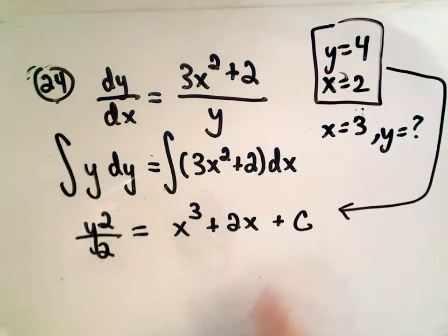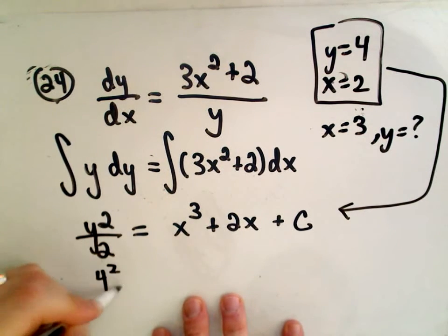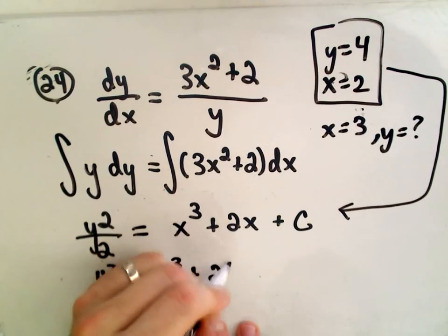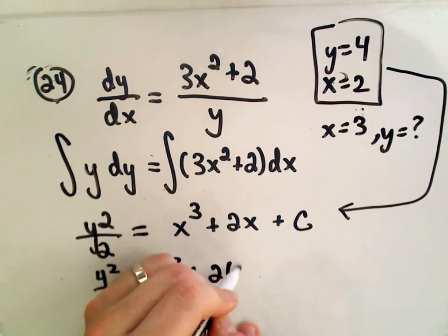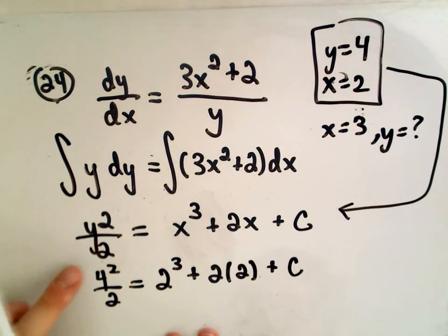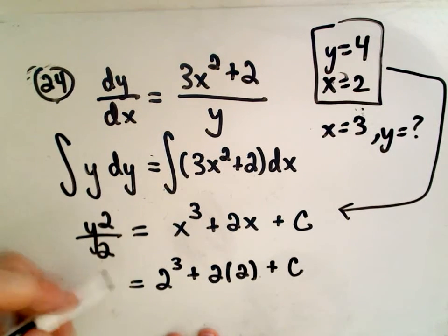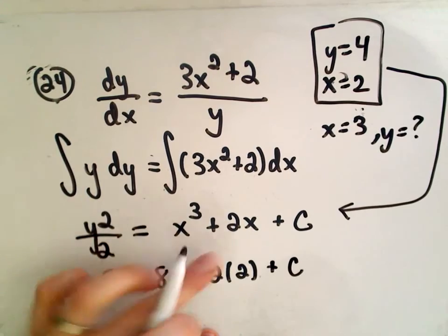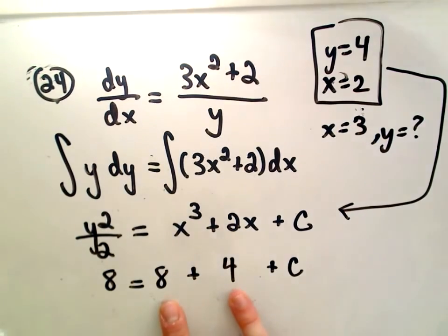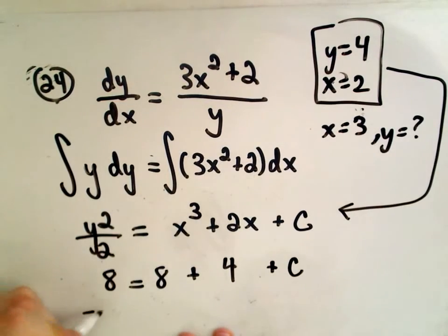And now what we're going to do is we're going to figure out this constant by using our first bit of information. So it says y equals 4, when x equals 2. So we'll plug 4 in for y and 2 in for x, and then solve for c. On the left, we'll get 16 over 2, or 8. 2 cubed is 8. 2 times 2 is 4. So on the right side, we would get 12. If we take 8 minus 12, we'll get negative 4 as our c value.